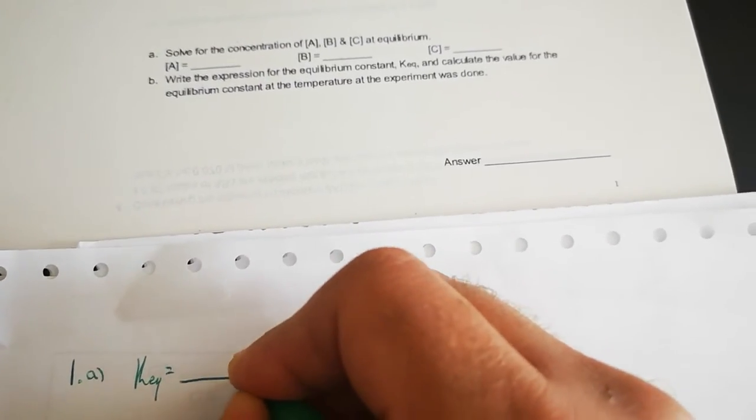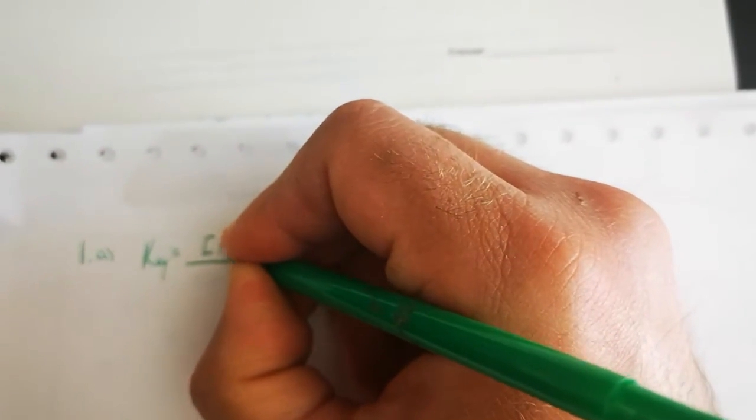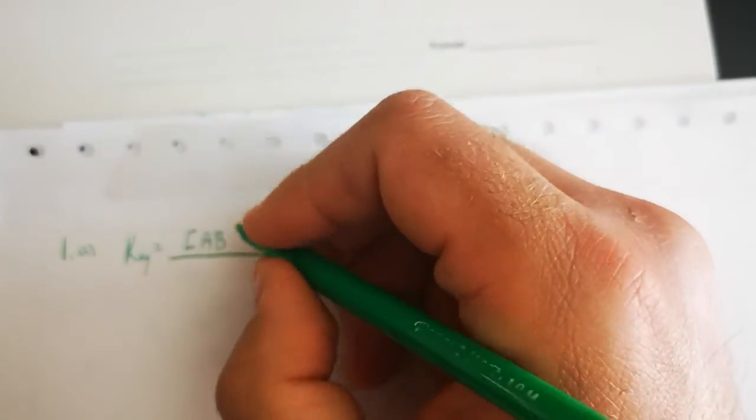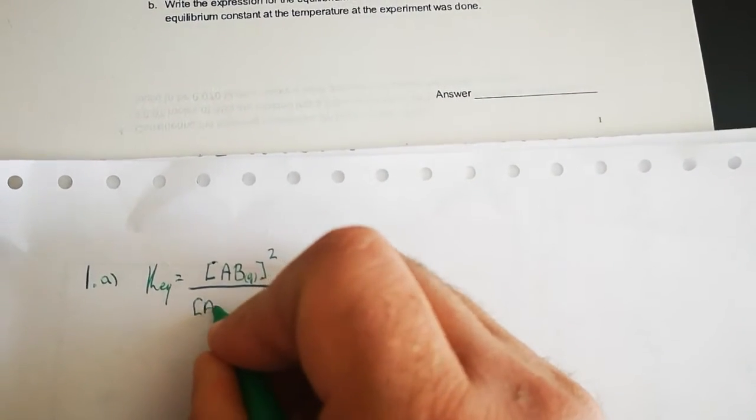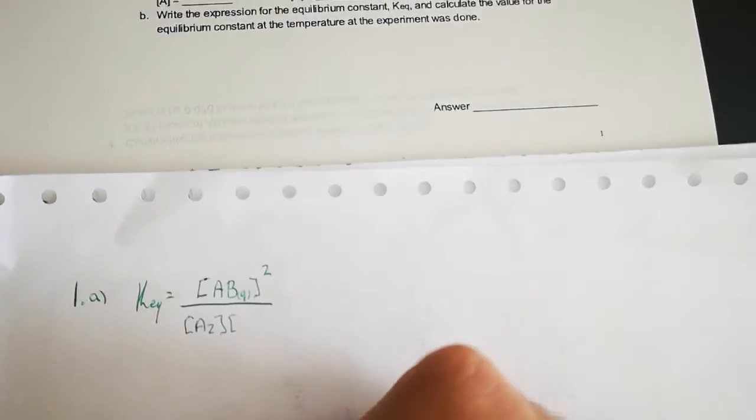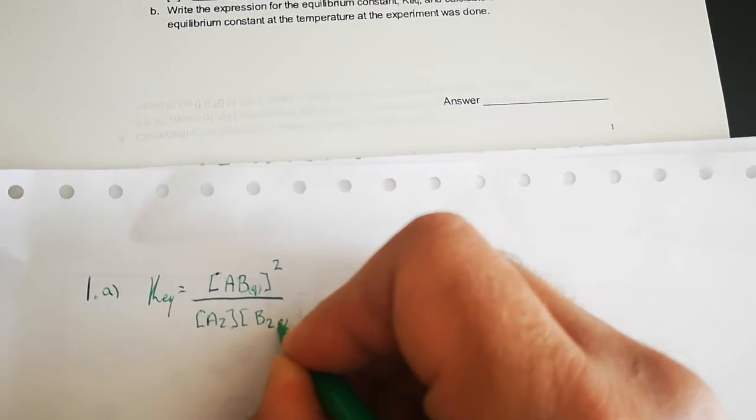So Keq would be equal to our product, which is the substance AB which is a gas, raised to the power 2, and this is divided by the concentration of A2 and the concentration of B2.